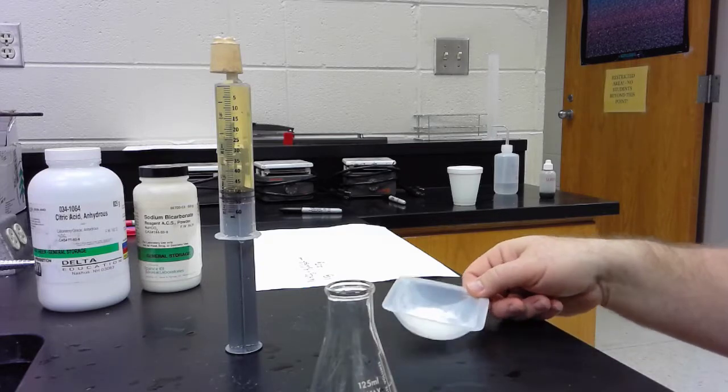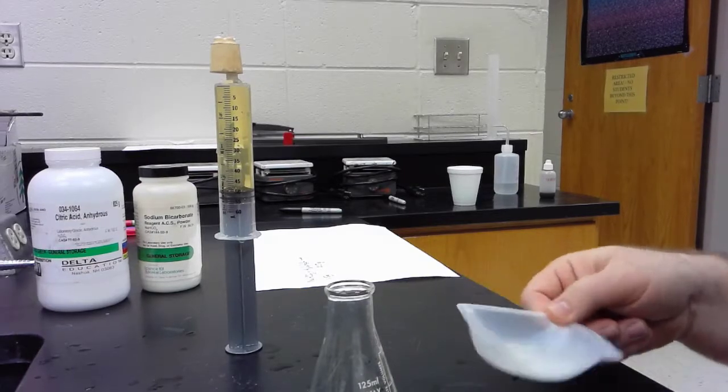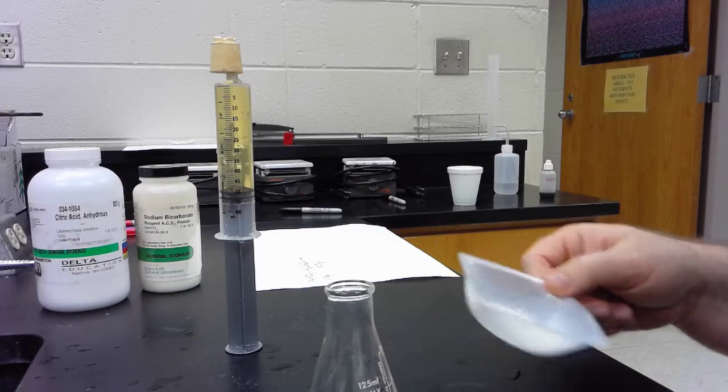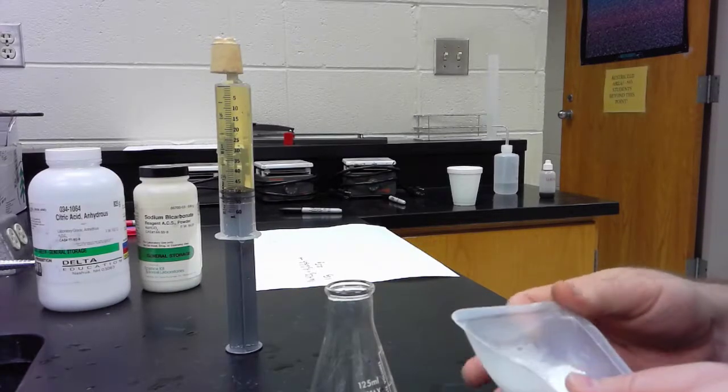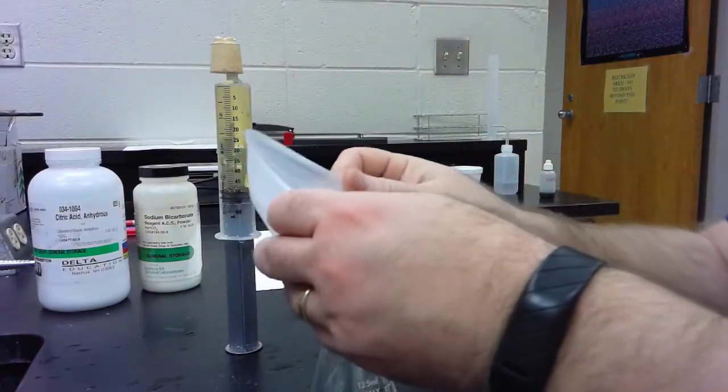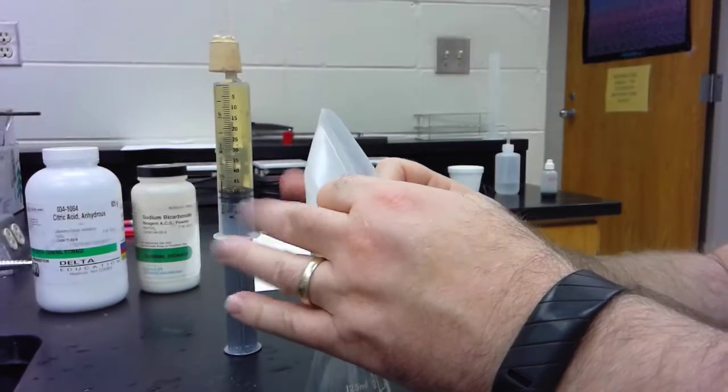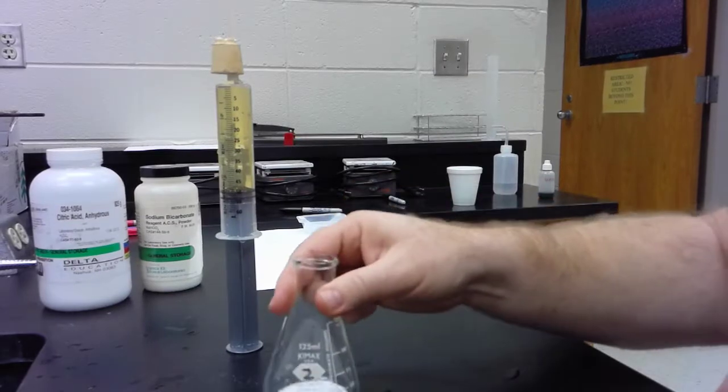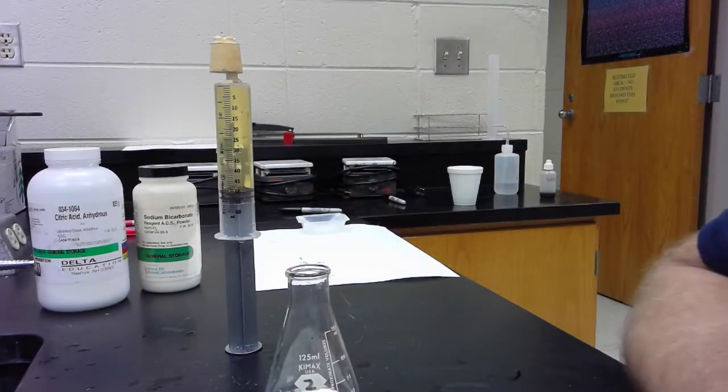I've made a mixture with half a gram of citric acid and one and a half grams of sodium bicarbonate. I'm going to put them in this little flask and I'm going to add some water from my syringe here. I've got about 50 milliliters of water.